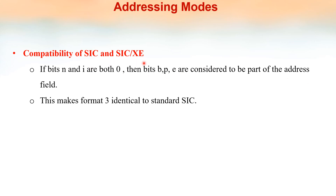Regarding compatibility of SIC and SIC XE: if bits N and I are both 0, then bits B, P, and E are considered to be part of the address field, making format 3 identical to standard SIC. The X bit is retained from SIC. Also, bit E is used to distinguish formats: E equals 0 means a format 3 instruction, and E equals 1 means a format 4 instruction.